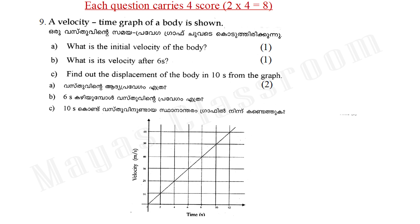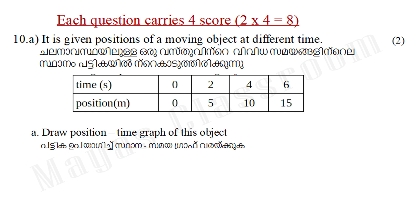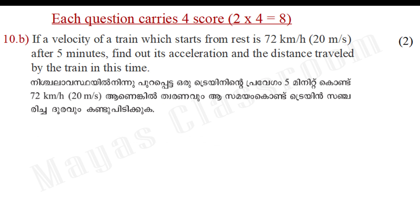A: 1 mark. B: 2 marks. 2 marks. 4 marks. A and B. It is given the position of a moving object at different times. Draw a position-time graph of this object. The B part is given.